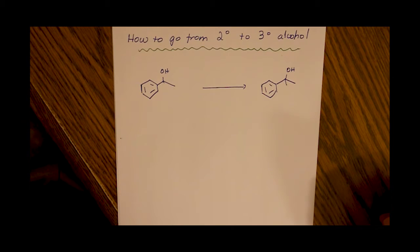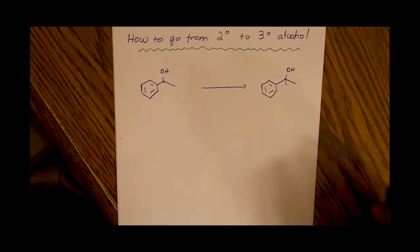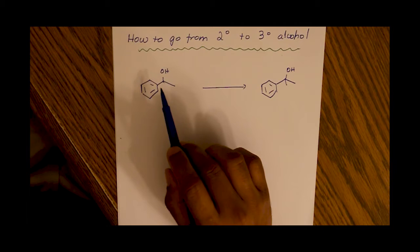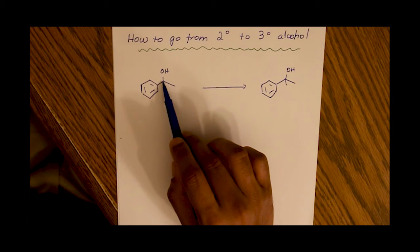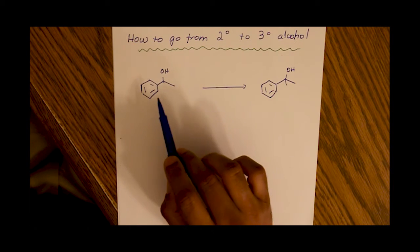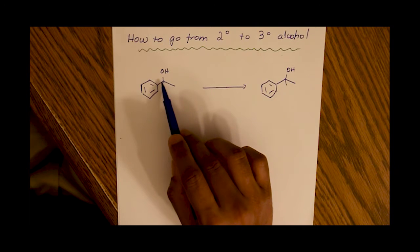How to go from a secondary to a tertiary alcohol. We have a secondary alcohol here. That means the OH is bound to a carbon that's bound to two other carbons. So this carbon is a secondary carbon.